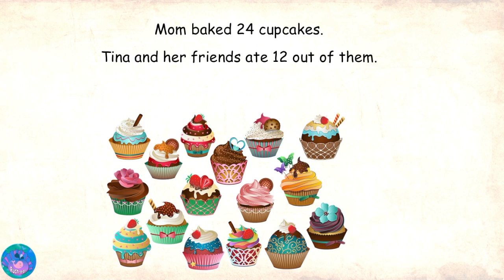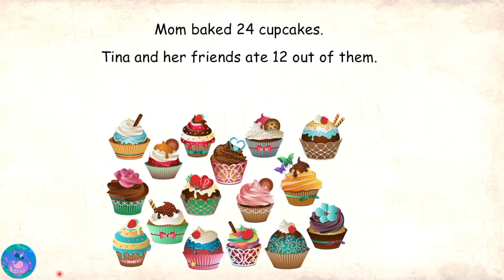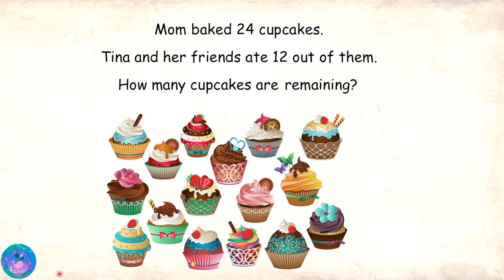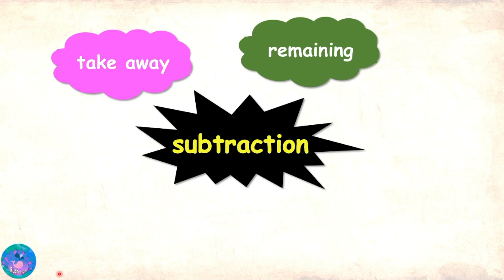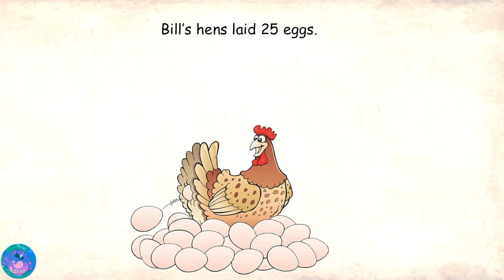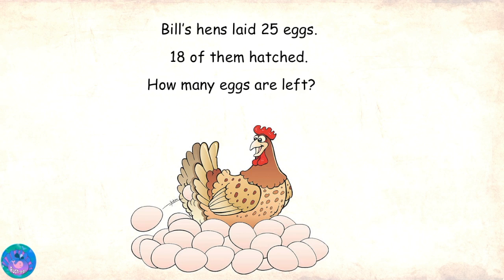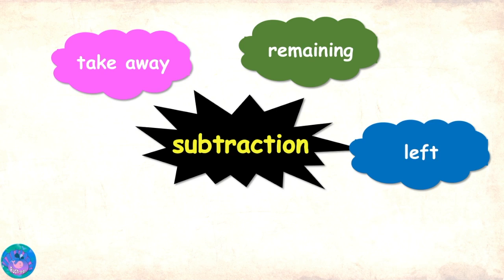Absolutely right. Mom baked 24 cupcakes. Tina and her friends ate 12 out of them. How many cupcakes are remaining? In this case, the word 'remaining' tells us that we need to take away the number of cupcakes eaten from the number of cupcakes baked. So, 'remaining' is another keyword for subtraction. Bill's hens laid 25 eggs. 18 of them hatched. How many eggs are left? The word 'left' tells me that we need to take away the eggs hatched from the eggs laid. So, 'left' will be another keyword for subtraction.